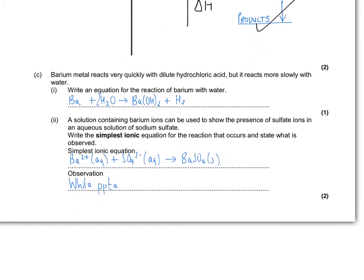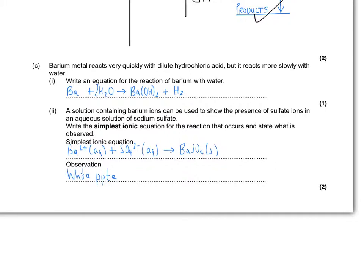Next question is about barium reacting with water. Barium oxide is the product with a reaction of steam. Then we're asked for the simplest ionic equation. Ba2+ ions plus sulfate ions go to BaSO4 solid. It's solid because it's a white precipitate. You do not need to show the state symbols. If you do, make sure you get them right.